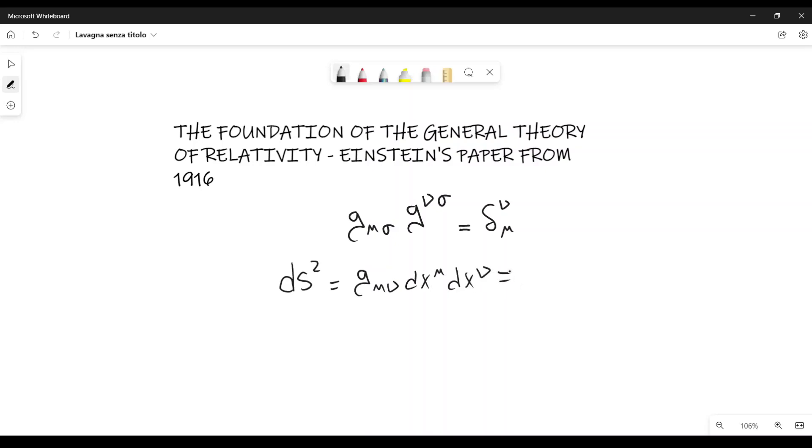And Einstein rewrites this element like this, g mu sigma delta sigma nu dx mu dx nu. It's another way of rewriting the same thing. This is an obvious relation.